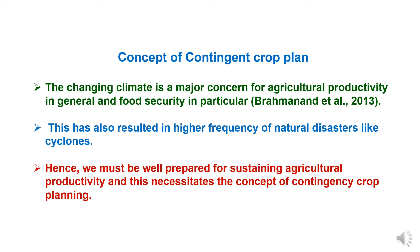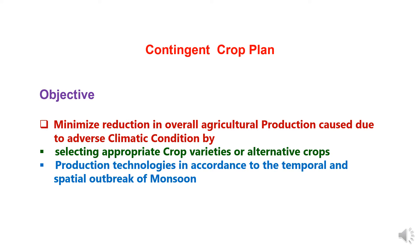Contingent crop planning is needed to minimize adverse effects of abnormal rainfall behaviors and other factors associated with crop production. The concept is associated with adverse weather conditions or climate change which is affecting agricultural production. The changing climate is a major concern for agricultural productivity in general and food security in particular. As per Brahman et al. 2013, this has also resulted in higher frequency of natural disasters like cyclones.